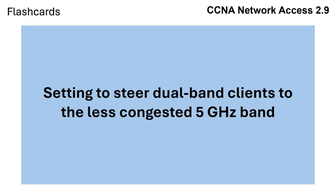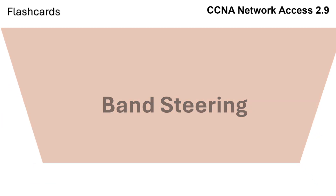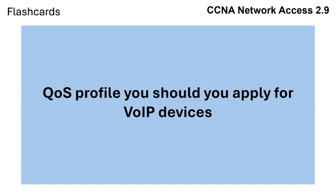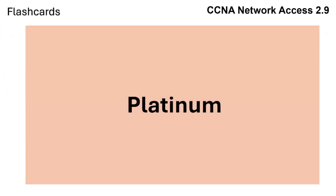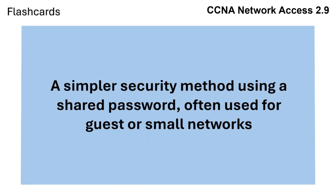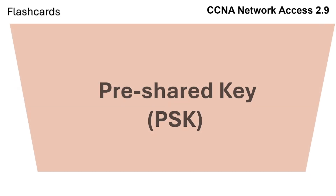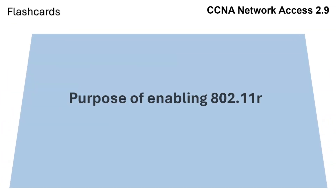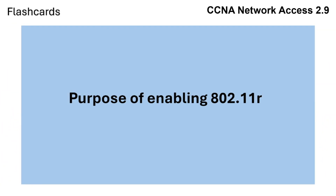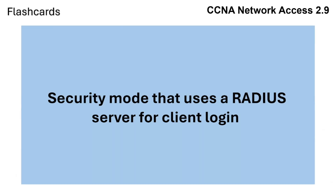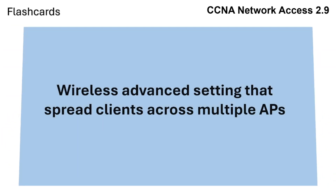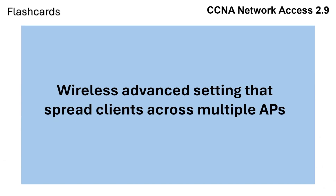Review questions: Which setting steers dual-band clients to the less-congested 5 GHz band? What QoS profile should you apply for voice over IP devices? What is the simpler security method using a shared password, often used for guests or small networks? What is the purpose of enabling 802.11r? Which security mode uses a RADIUS server for client login? Which wireless advanced setting spreads clients across multiple access points?